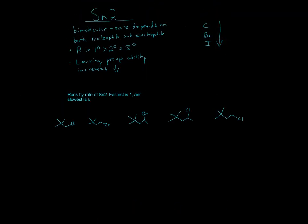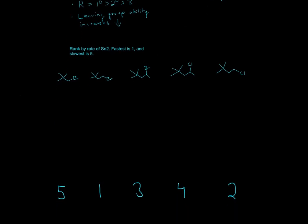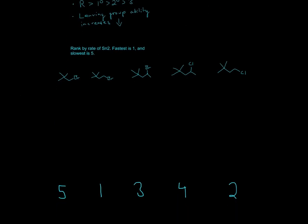Well, leaving group ability increases as you go down. So Br is a better leaving group than Cl. That means that if it's better, it will react faster. Therefore, since this is a 1°, a primary carbon, and it has a really good leaving group, this will be number 1. Since this is the only other primary, this will be 2.